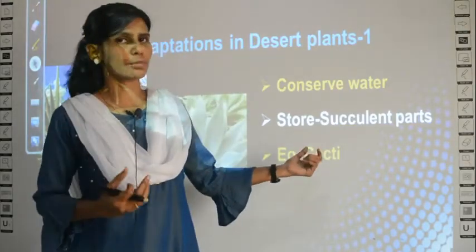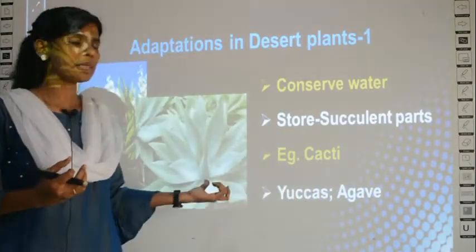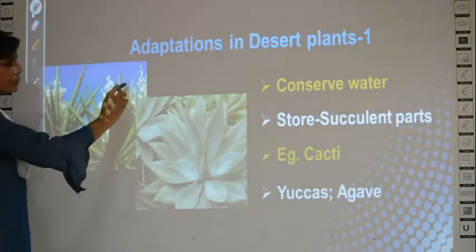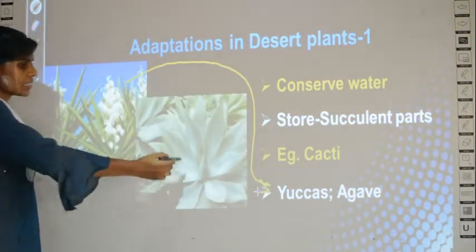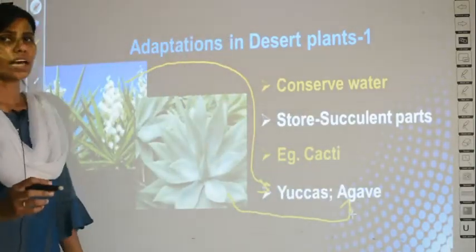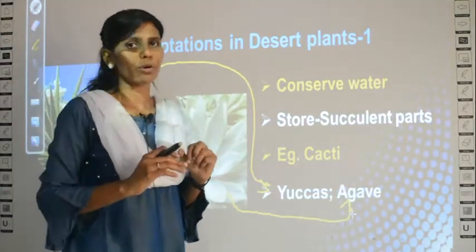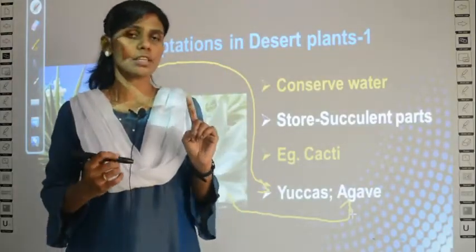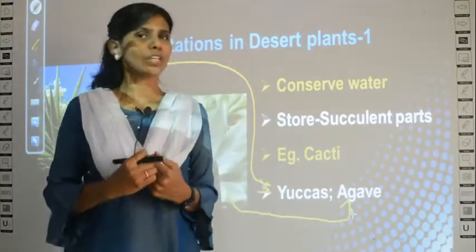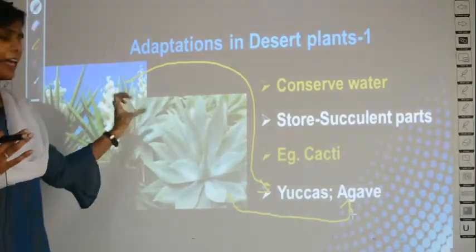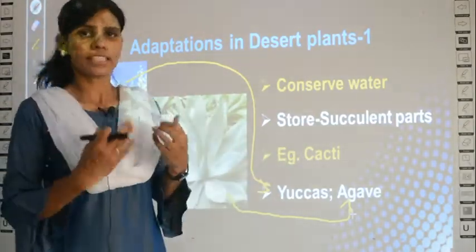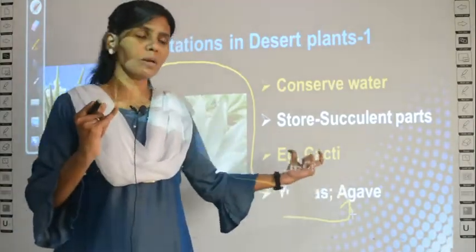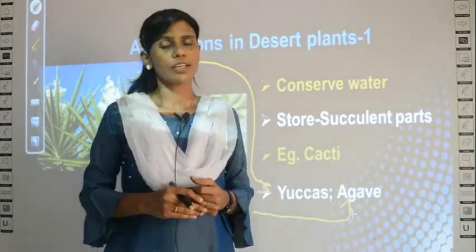Examples of plants that conserve water in their succulent parts are cacti, eucas, and agave. The succulent plant part where water is stored is usually the stem. So the first adaptation of desert plants is that they store or conserve water in their succulent stem. There are four adaptations given in your textbook — this is the first one.